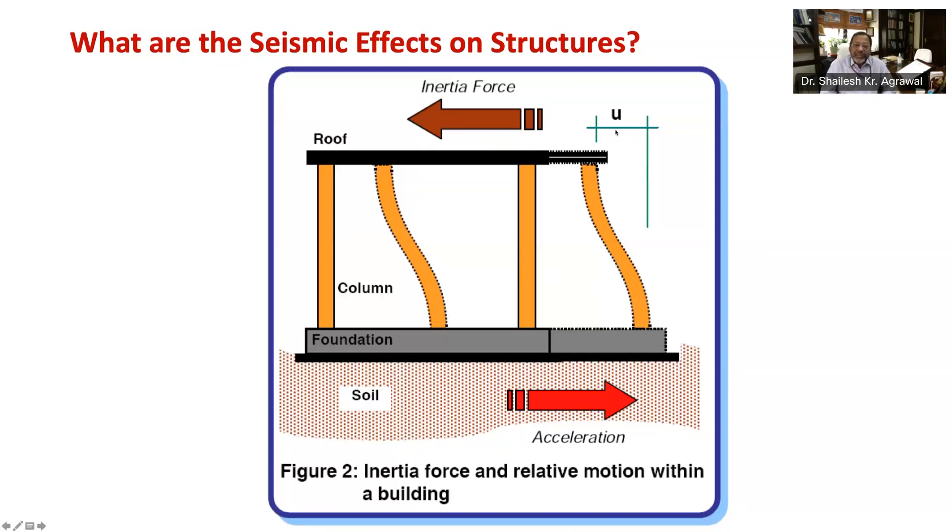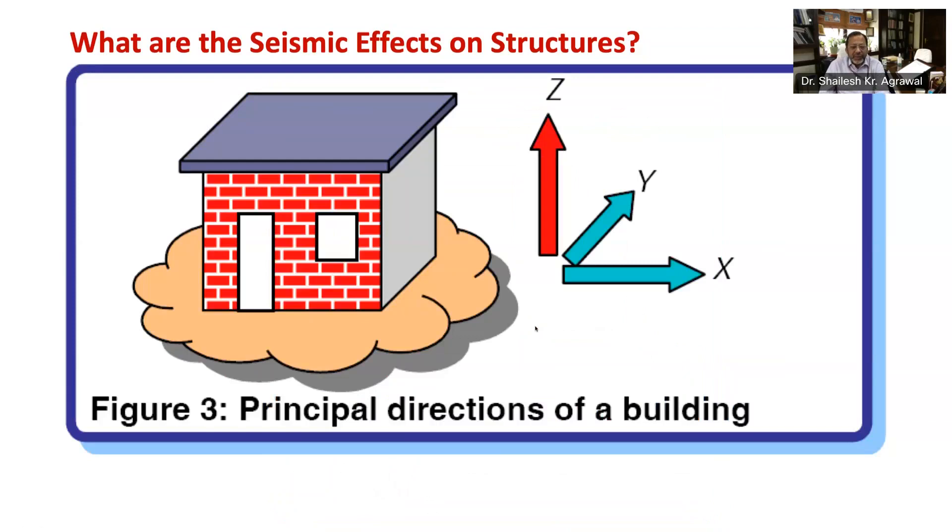So in summary, we can say during shaking, the inertia forces developed, which is to be transferred to the ground through beams, columns, and walls. Now let's have a look at this figure, which shows that earthquake shaking can be in all three directions: two orthogonal horizontal directions X and Y, and vertical direction Z.